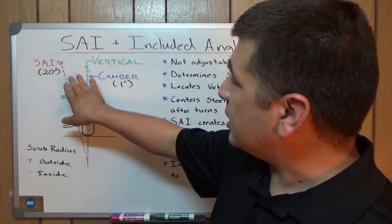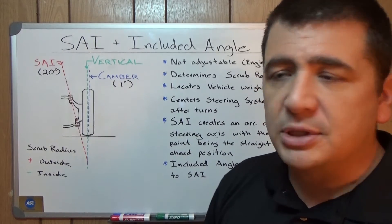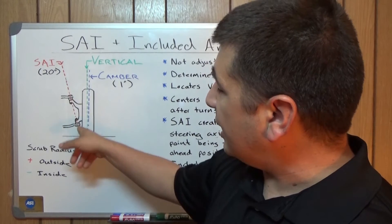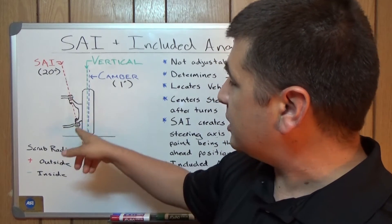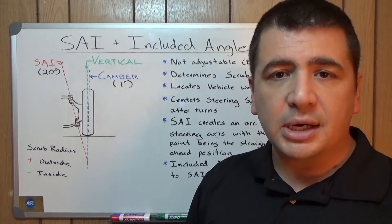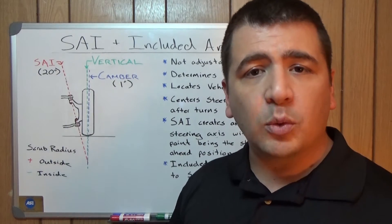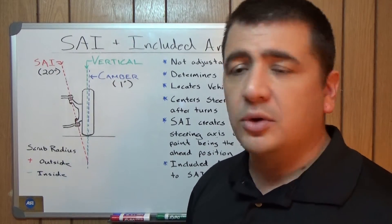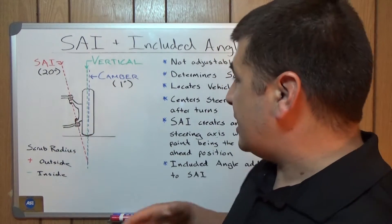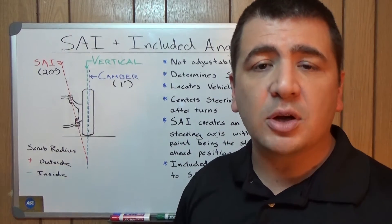It may not be perfectly accurate but we're going to call this 20 degrees just for illustration purposes. The distance between where that line intersects the ground and where the center of the tire intersects the ground — that's called your scrub radius. The scrub radius has to be equal from one side of the vehicle to the other. You have to have the same amount of tire contacting the road. That is how these angles are designed to project the weight of the vehicle onto the road.